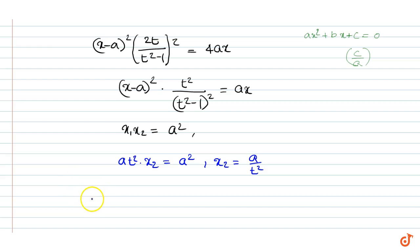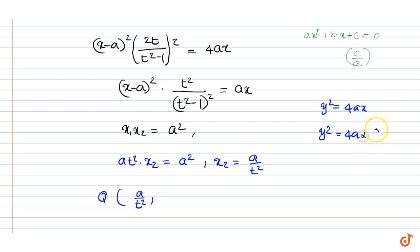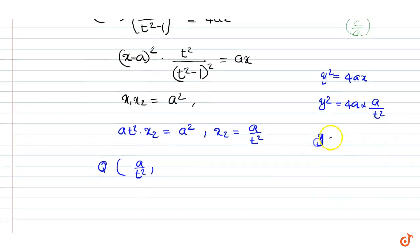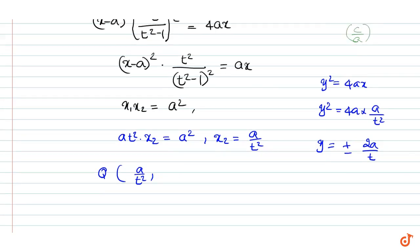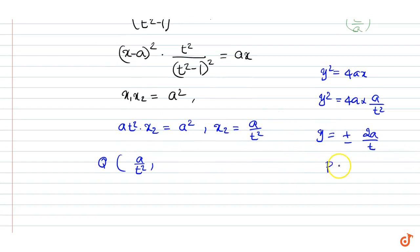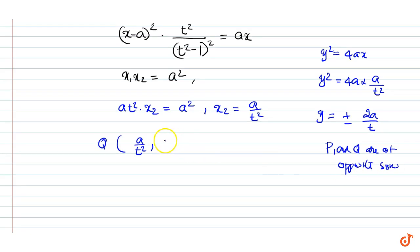Therefore, the x-coordinate of Q is a/t². The y-coordinate is found from y² = 4ax = 4a · (a/t²), giving y = ±2a/t. Since the y-coordinates of P and Q are on opposite sides of the x-axis for a focal chord, we take the y-coordinate of Q as -2a/t.